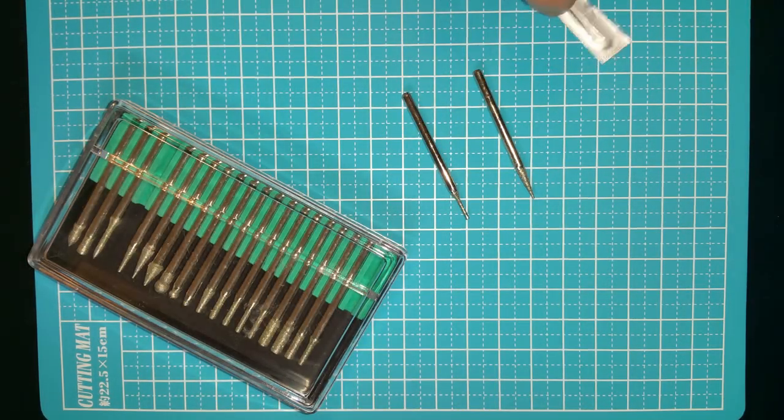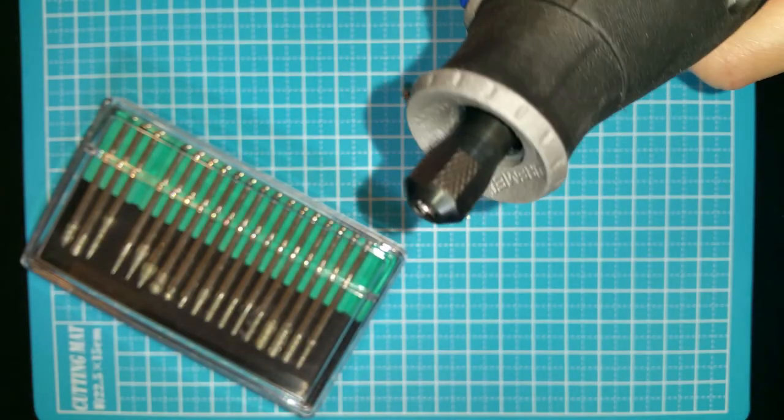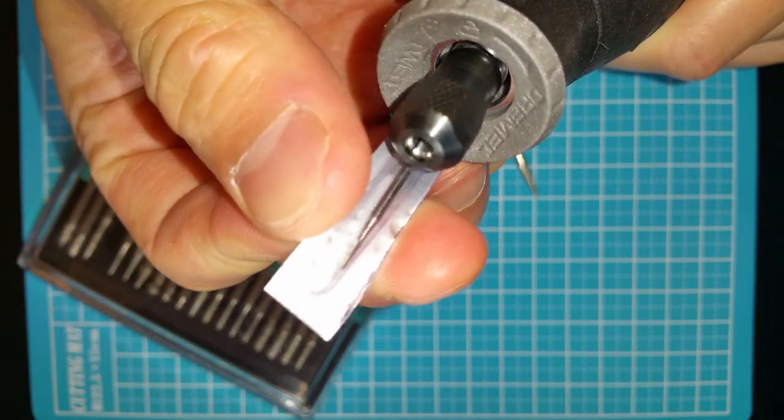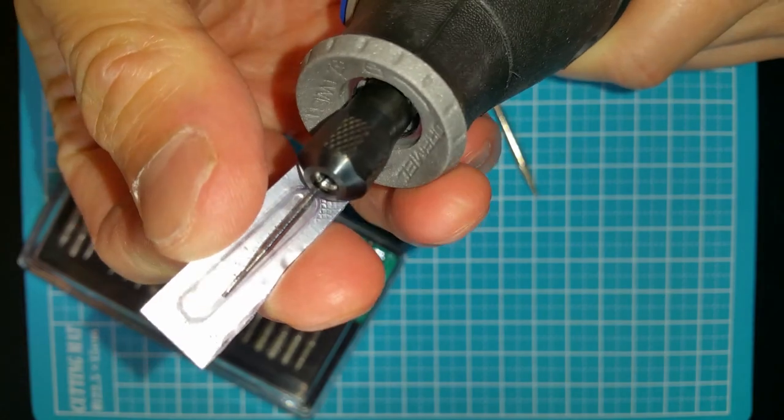I did not end up using a proper drill bit as my Dremel tool's collet is not the right size for it, as you can see here. So I ended up using a diamond tip drill bit.